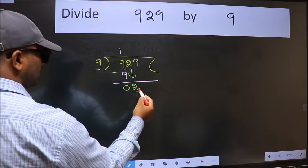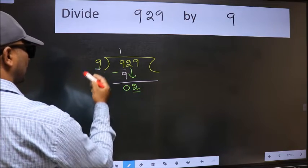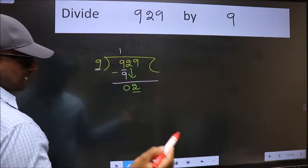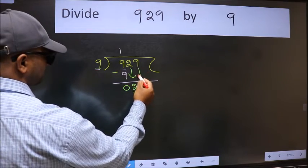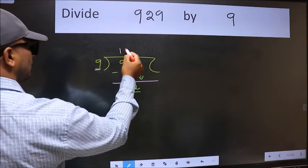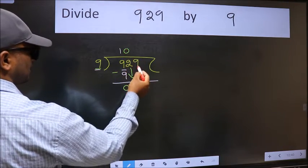Now here we have 2 and here 9. 2 is smaller than 9, so we should bring down the second number. The rule to bring down the second number is we should put zero here, then only we can bring this number down.